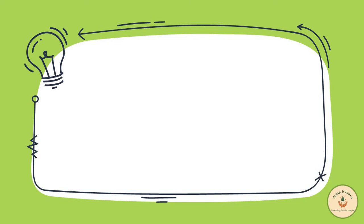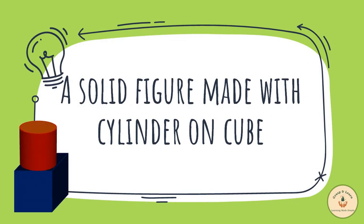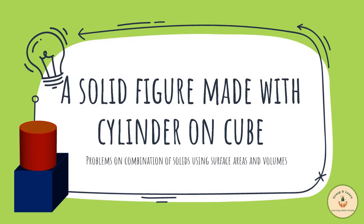In this video we will discuss a problem based on finding the volume and total surface area of a solid figure that consists of a solid cylinder mounted on a solid cube. Such questions come under the problems based on combination of solids, where we can apply the formulas of surface areas and volumes on the given figure.